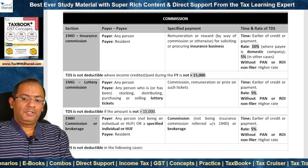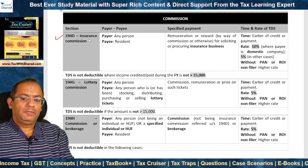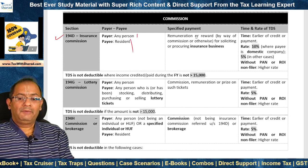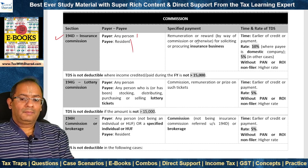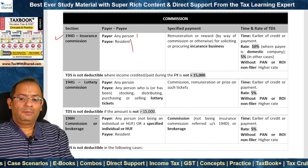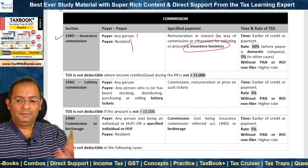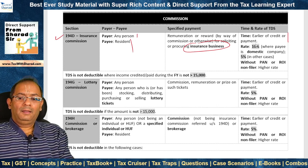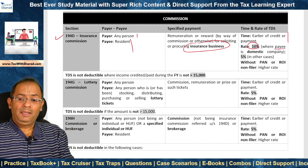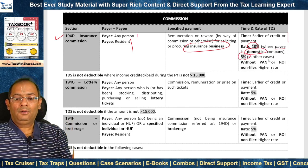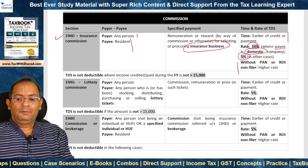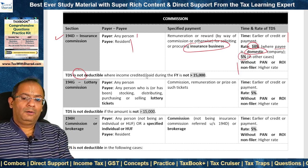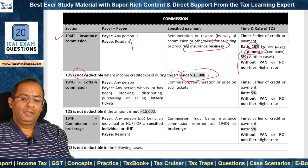Section 194D deals with insurance commission. The payer can be any person and the payee should be a resident. The specified payment is remuneration or reward, as commission or otherwise, for soliciting or procuring insurance business. TDS is deductible at the time of the earlier of credit or payment at the rate of 10% where the payee is a domestic company, and 5% in all other cases. A higher rate applies for without-PAN or ROI non-filer cases. TDS is not deductible where income credited or paid during the financial year is not more than Rs. 15,000.